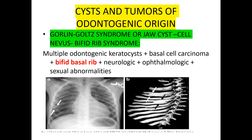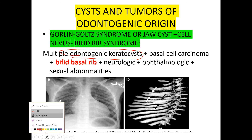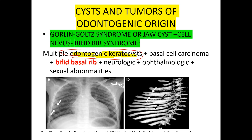The last topic is Gorlin-Goltz syndrome, also called Basal Cell Nevus Bifid Rib syndrome. You have to remember that multiple odontogenic cysts are present in Gorlin-Goltz syndrome, along with basal cell carcinoma — a skin cancer — and bifid basal rib. You can see the bifid rib here — this rib is bifid, meaning split in two. This is Gorlin-Goltz syndrome.